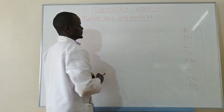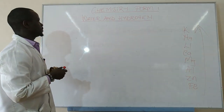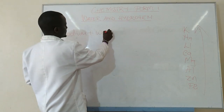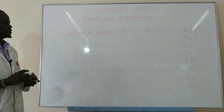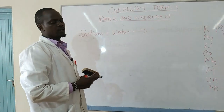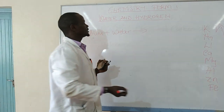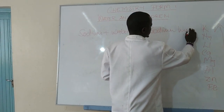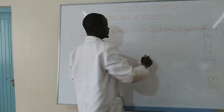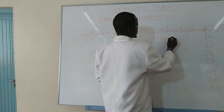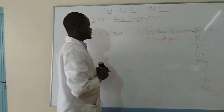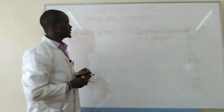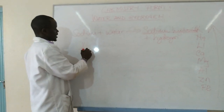Let's take sodium as an example. What happens when sodium is placed in cold water? Sodium will react vigorously with cold water and will give a product: sodium hydroxide, and a gas. When tested, sodium hydroxide is found to be alkaline.